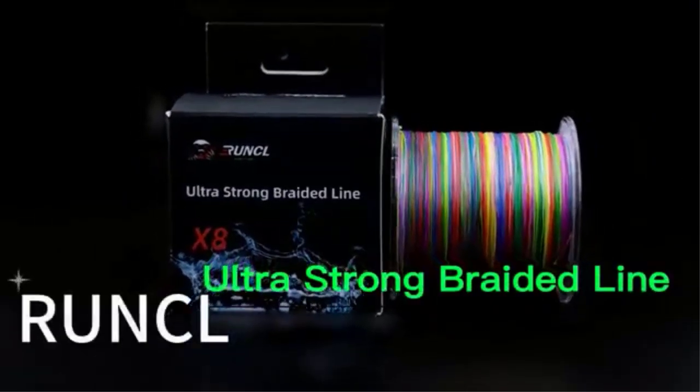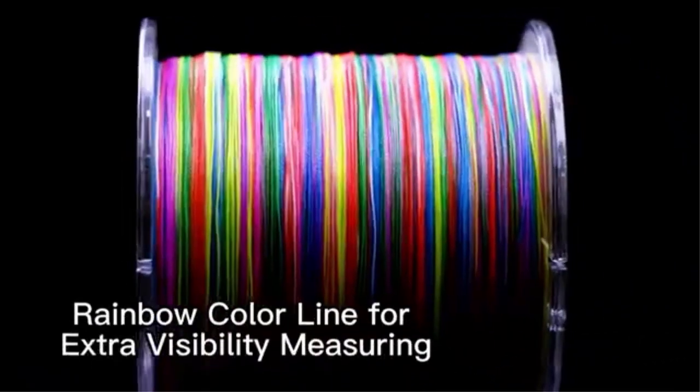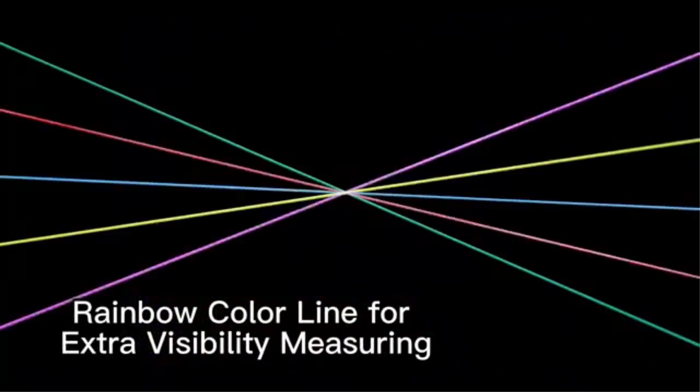There are tons of line options in the market made of different materials, but they all boil down to three types: monofilament, fluorocarbon, and braided fishing lines.